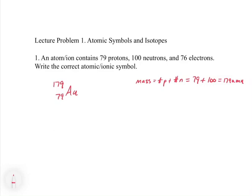We have 76 electrons, so now we calculate the charge: 79 protons minus 76 electrons equals plus 3. We write plus 3 as the charge, giving us the complete ionic symbol. You can also work in the reverse direction — given a symbol, you can be asked to determine properties of the atom. This has been an introduction to atomic symbols and subatomic particles. In the next video, we'll look at what happens when we change the ratio of protons to neutrons, which gives us isotopes — the same element with different mass numbers.